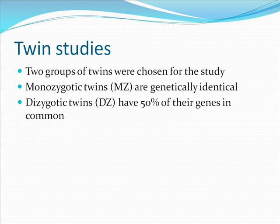In medical research, twin studies have been widely used to look at how a human disease develops depending on genetic and environmental factors. For this study, two groups of twins were chosen. The first group are called monozygotic twins, and these twins are genetically identical. The second group are called dizygotic twins and only have 50% of their genes in common.